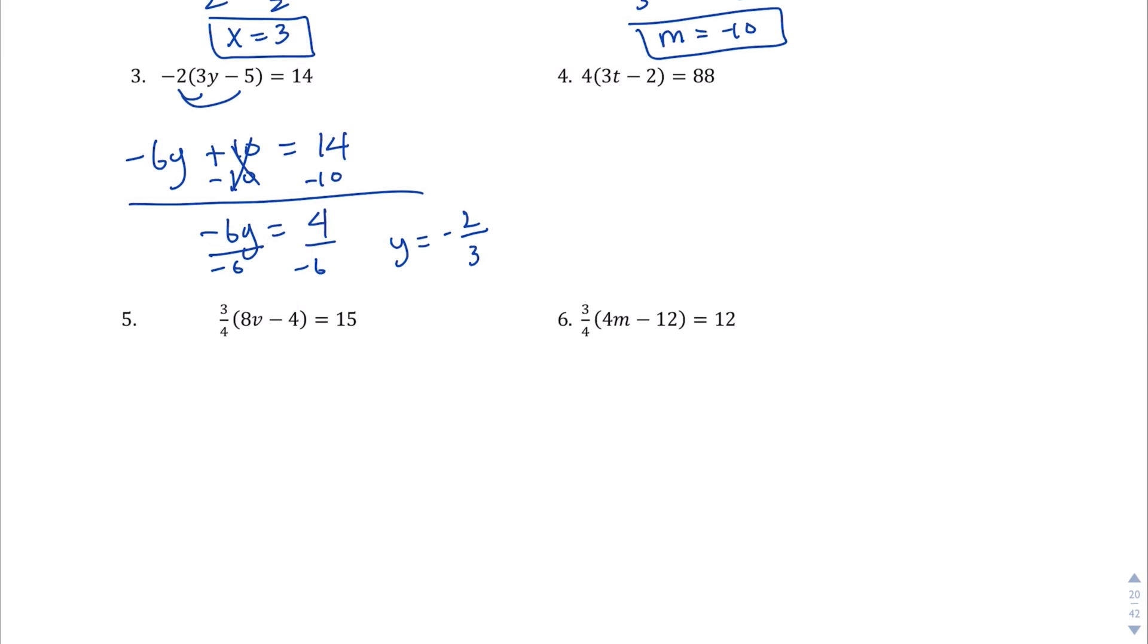Question number four. There we go. So we're going to distribute that 4 to both terms there. We've got 12T minus 8 equals 88. Let's get rid of this guy first by adding 8 to both sides. We should get 12T is equal to 96. Divide both sides by 12. We should get T equals—what is that—8? For question number four.